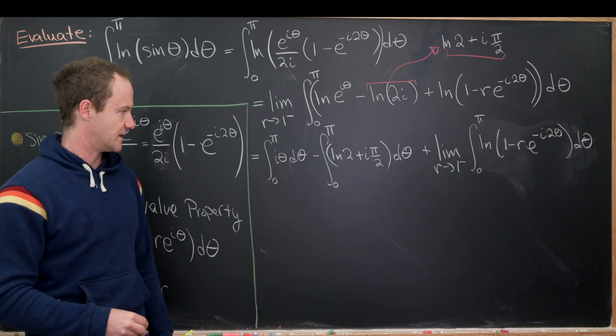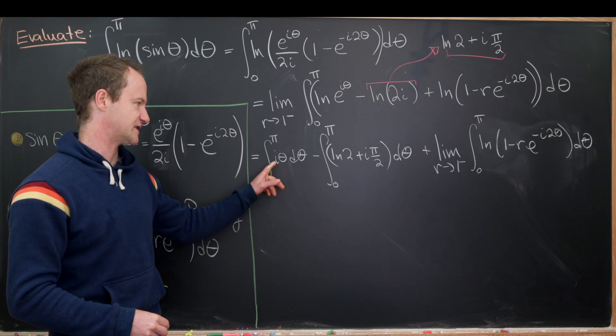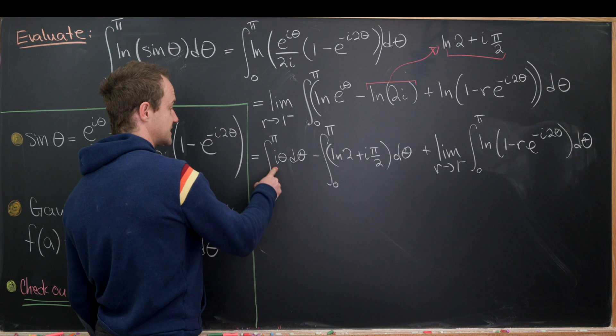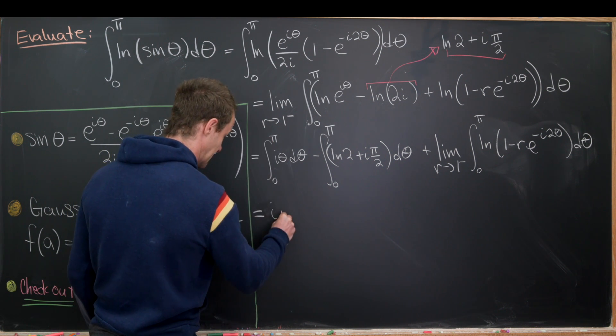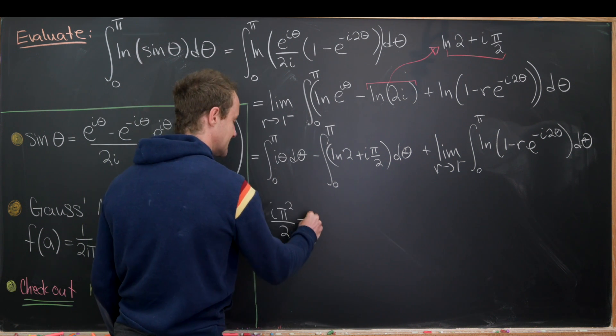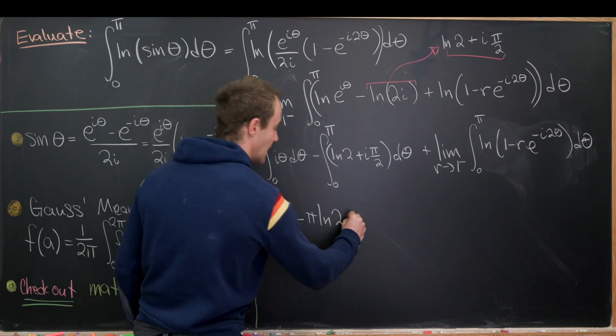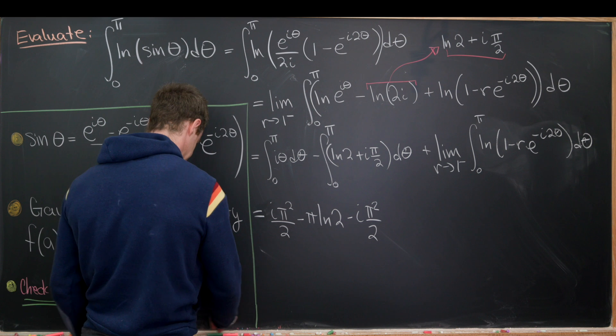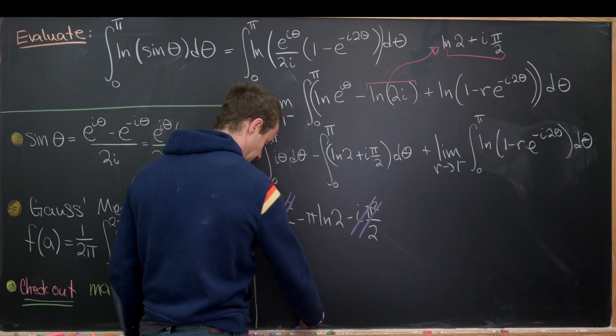Okay, so that's starting to look good. But now each of these integrals is fairly straightforward because here we just have i times theta. And here we just have a constant, in fact. So this first one will give us i times theta squared over 2 evaluated at pi. So that's going to be i times pi squared over 2. And then here we'll have minus pi times the natural log of 2 from this first term. And then another minus i times pi squared over 2 from this second term. But now we see that this term right here will cancel with this term right here.